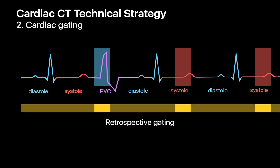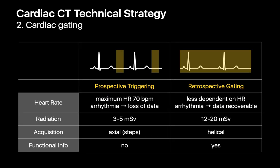If we had done retrospective cardiac gating in the case of a PVC, we'd have the ability to go back and change where in the cardiac cycle we'd like to create our images from. Prospective triggering generally works best when heart rates do not exceed 70 beats a minute. One big advantage of prospective triggering is that radiation doses are a fraction of what patients receive with retrospective gating. However, prospective triggering is brittle — arrhythmias can lead to a loss of decent data needed to create images. Retrospective gating is much more robust to heart rhythm and heart rate issues, though it comes at the cost of much higher radiation dose.